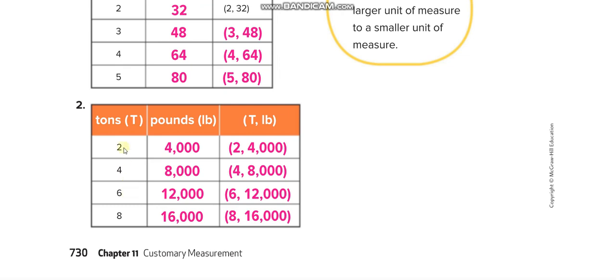For the tons-to-pounds table: 2 tons is 2 times two thousand, which is four thousand pounds. Similarly, we multiply each number of tons by two thousand to fill in the table.